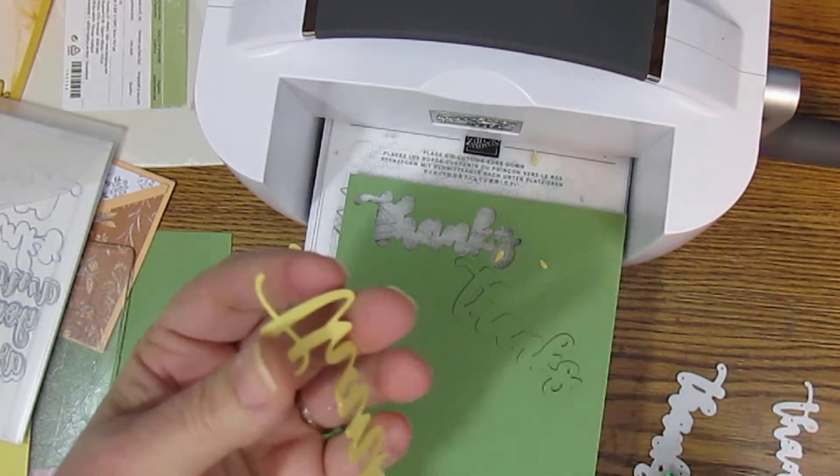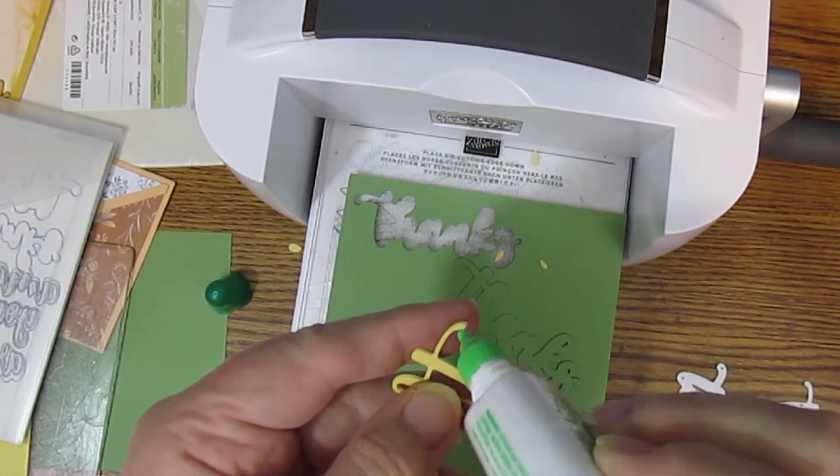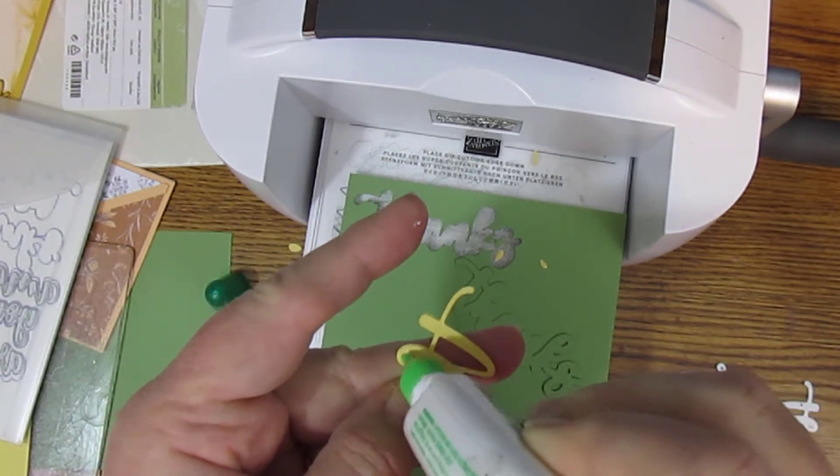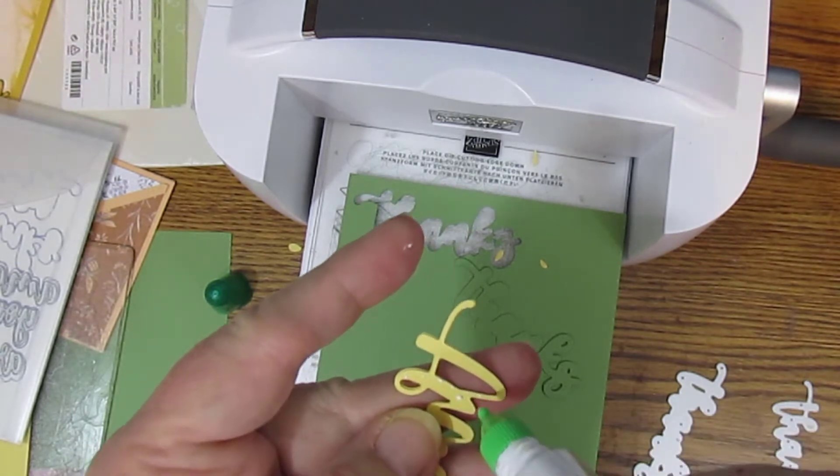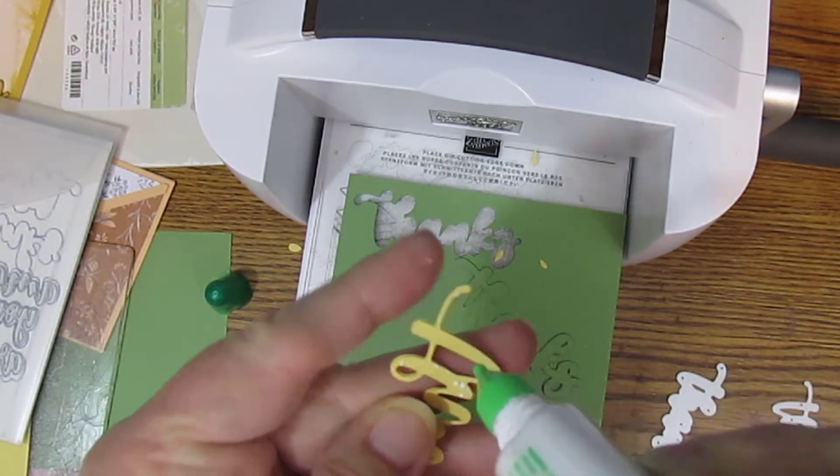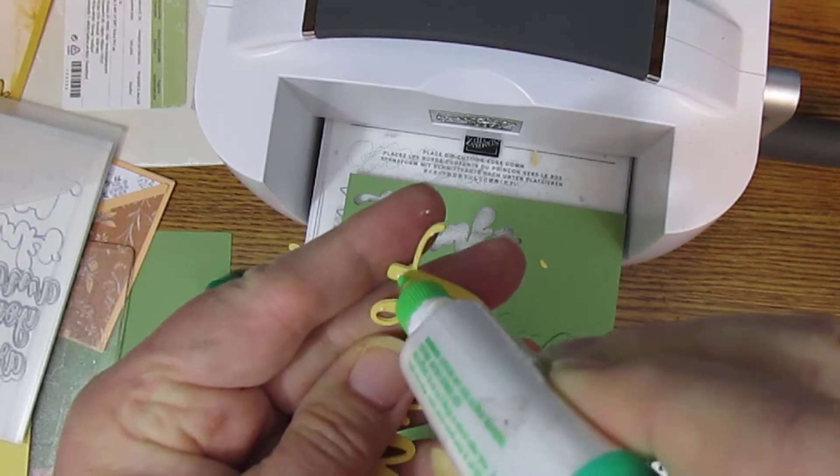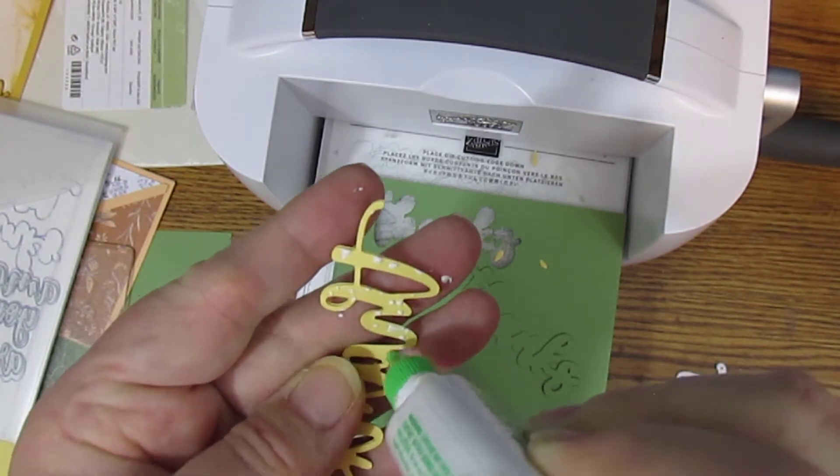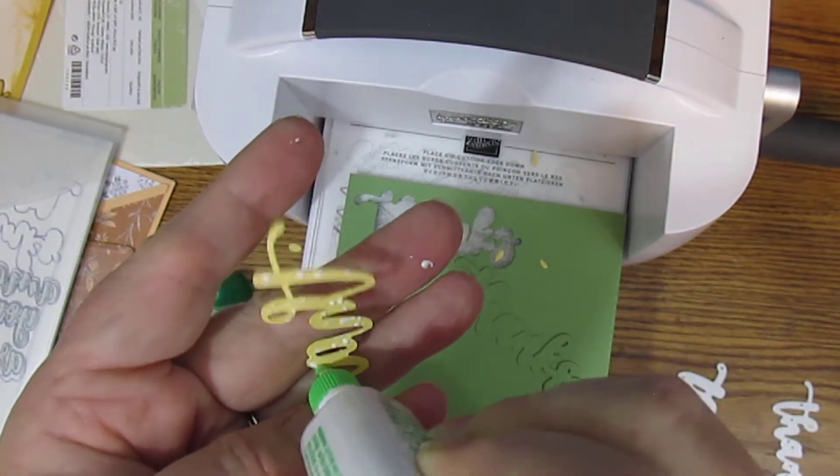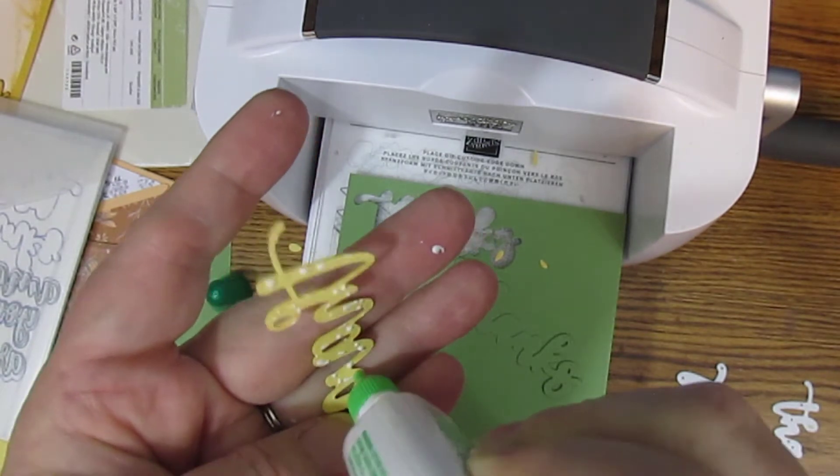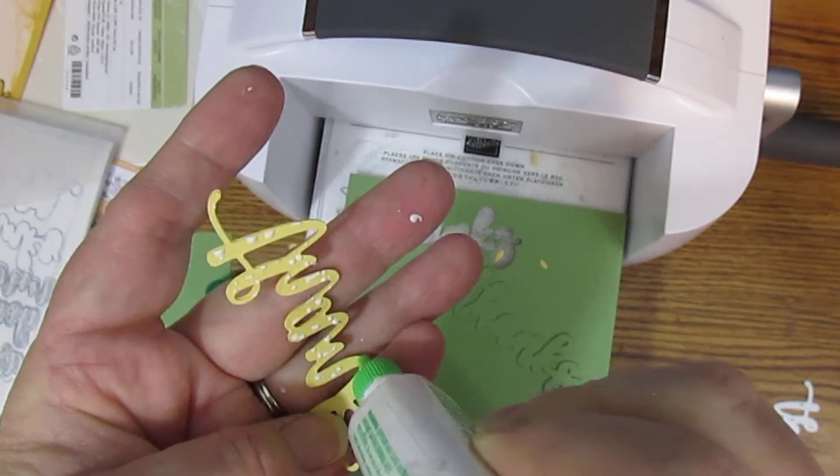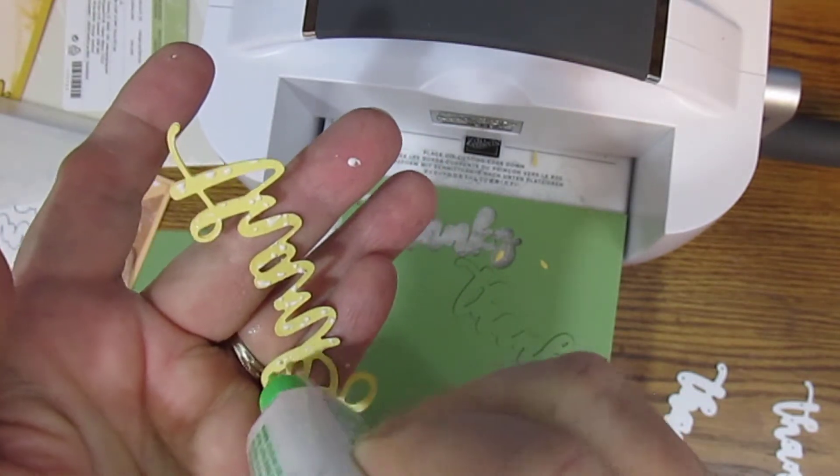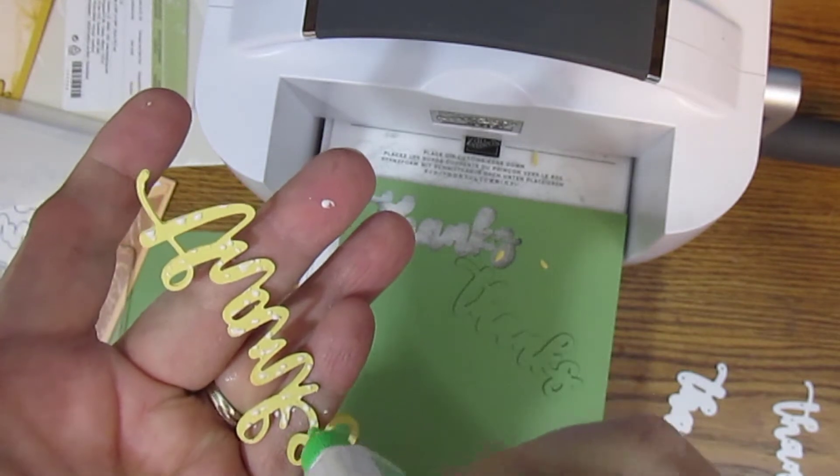And we will again add glue to the back of this one. This time it's not so floppy. Yes, my one friend does all these perfectly spaced teeny dots of glue.